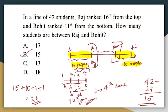Whatever be the rank of Rohit, after Rohit's rank there are 10 more people. We have to find out the remaining people between them. When finding the number of people between Raj and Rohit, we should not include Raj and Rohit themselves. So before Raj there were 15 people, then Raj himself. After Rohit there were 10 people, then Rohit himself — that is 27 people excluding those between Raj and Rohit. If totally 42 people are there, 42 minus 27 equals 15. Your correct answer here is option B.